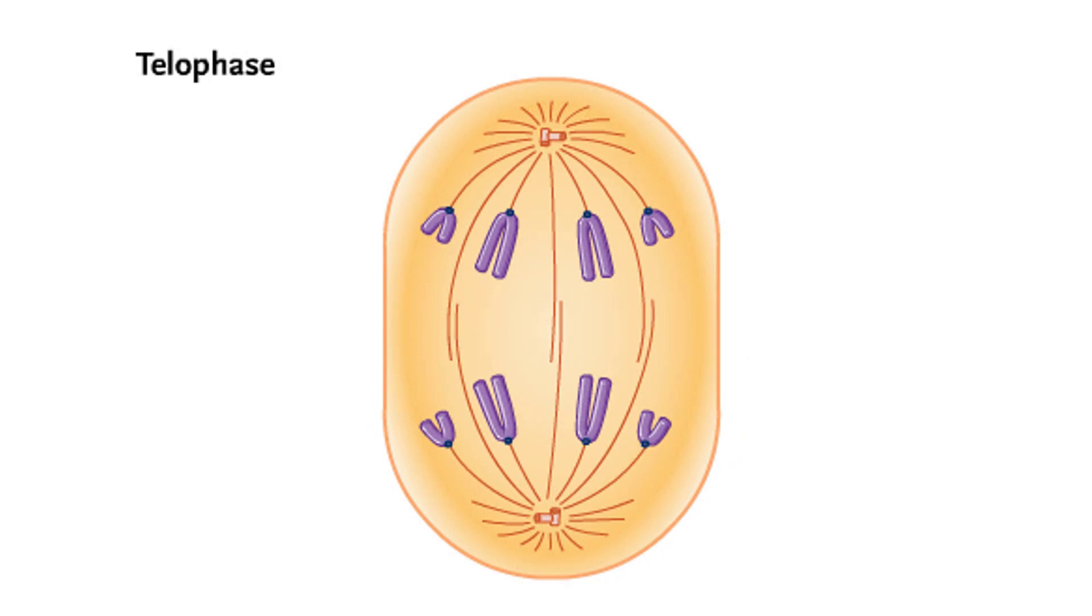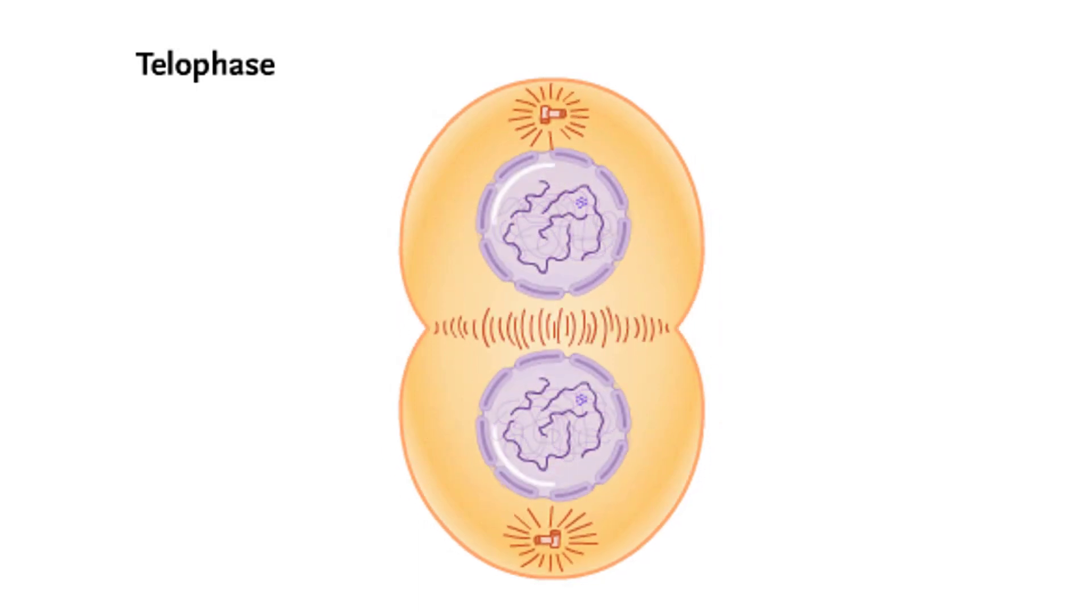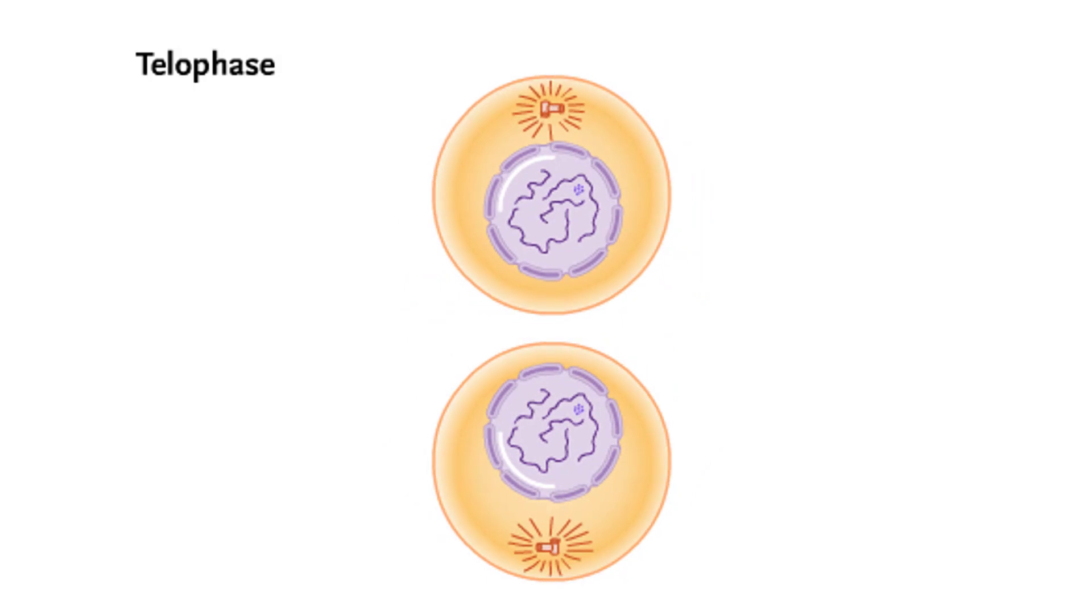Telophase gets underway once the chromosomes arrive at the spindle poles. The chromosomes decondense and patches of new membrane fuse to form two nuclear membranes. Mitosis is now complete.